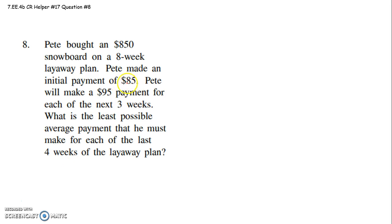All right. Three and four make seven. So the initial payment must be his first week's payment. That's the only question I'm having right now, but okay. So he bought a snowboard for a total of $850. So at the end of the day, he's got to make sure he's paid his $850. He's got this eight-week layaway plan. He makes an initial payment of $85.